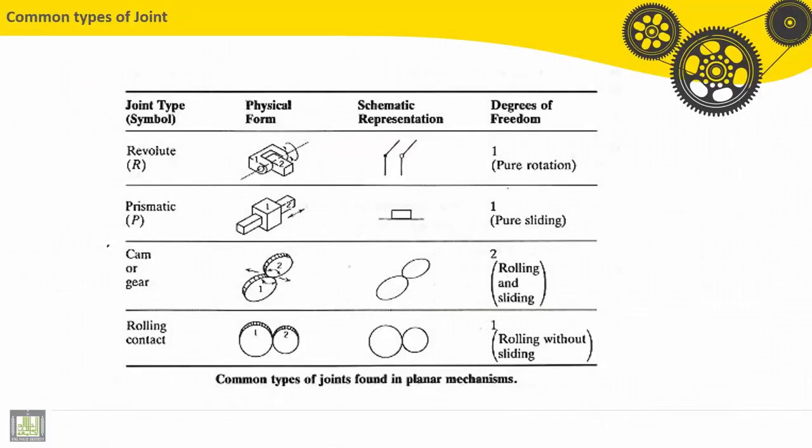We'll continue with types of joint here. So the common types, first one is the revolute, R, the symbol is R.